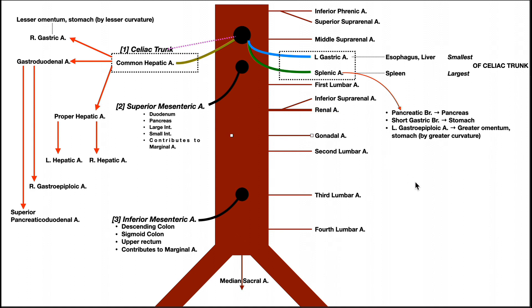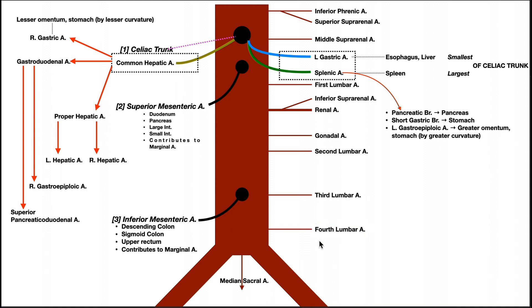Below the renal artery we have the gonadal artery, which supplies the gonads. In females it's called the ovarian artery; in males it's the testicular artery. The term gonadal artery is used when speaking generally. Beneath the gonadal arteries are the second, third, and fourth lumbar arteries. In some individuals there's also a fifth, but that's a genetic variation.